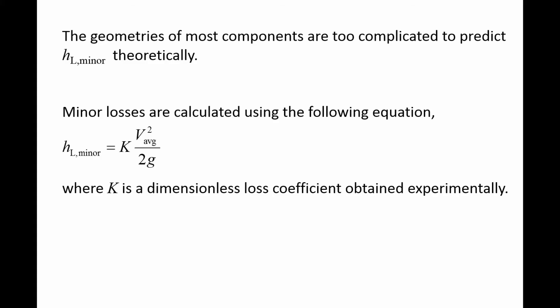For each component, the minor loss is equal to K times V_average squared over 2g. K is a dimensionless loss coefficient that is obtained experimentally. Higher K values indicate higher losses for the same flow speed.